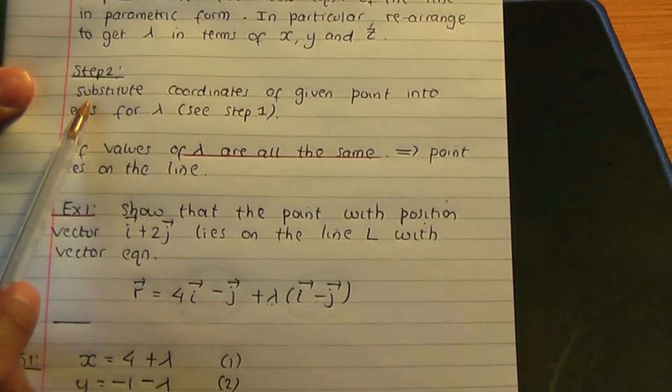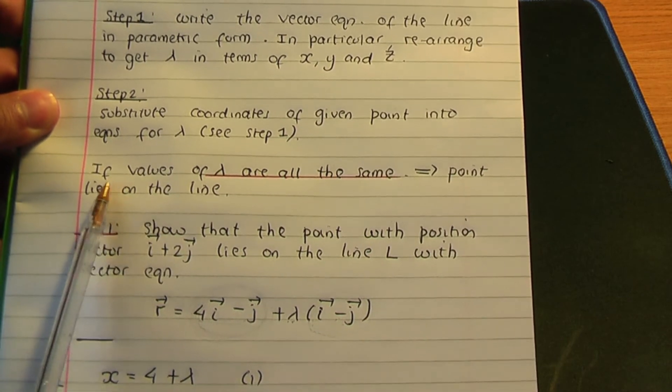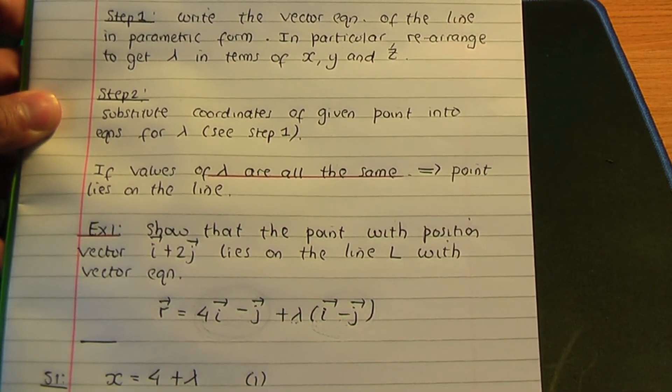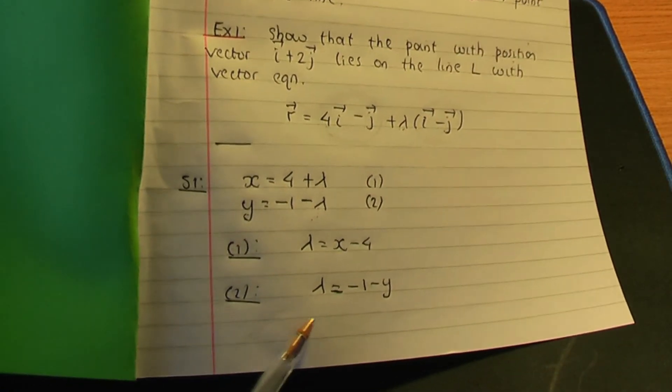Once you've done that, go to step number two. Step number two is to substitute your coordinates into these equations for lambda, and if the values of lambda are all the same, that implies the point lies on the line. So copying our equations: lambda = x − 4 and lambda = −1 − y. The given point is i + 2j, so the x-coordinate is 1 and the y-coordinate is 2.